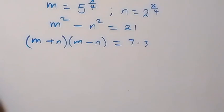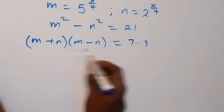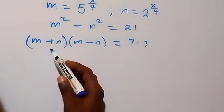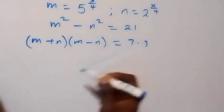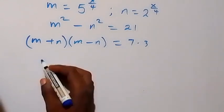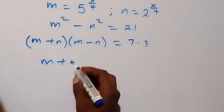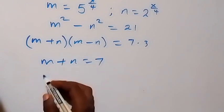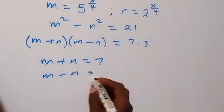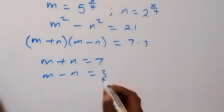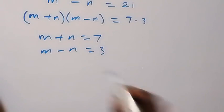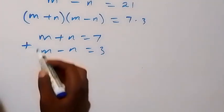And from here, m plus n is greater than m minus n, so that means m plus n will be 7. So we have m plus n equals to 7, and m minus n equals to 3. So now we solve these two equations to get m and n.